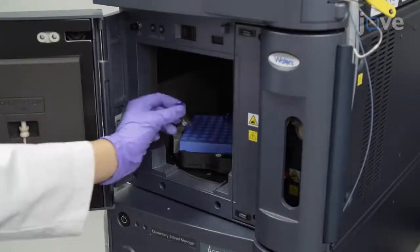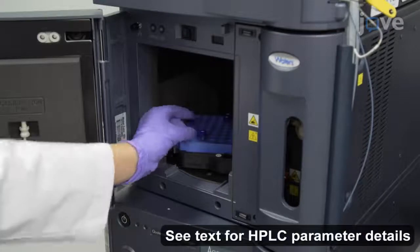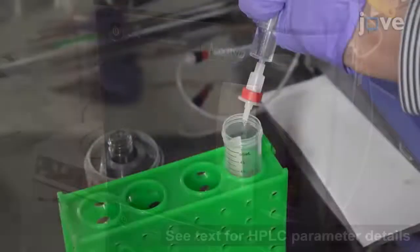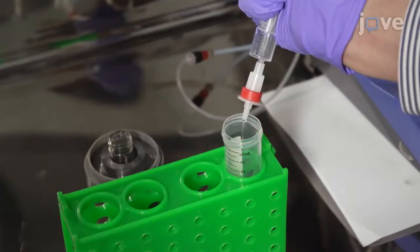To purify the crude product with high-performance liquid chromatography, add the solution to a C18 column and pass it through a C18 reverse phase cartridge.